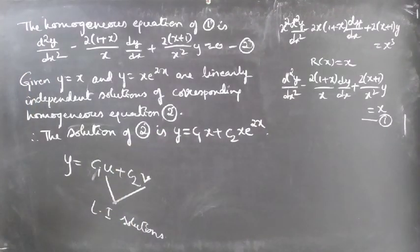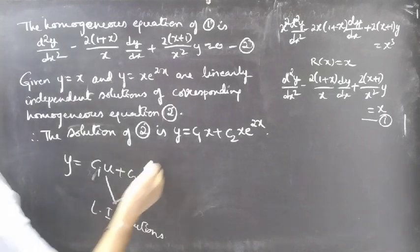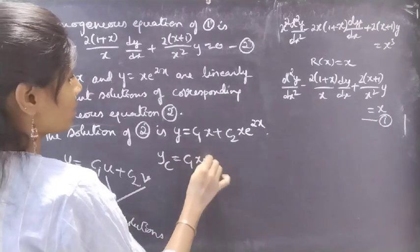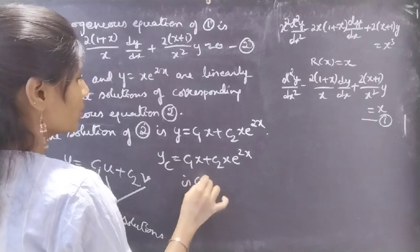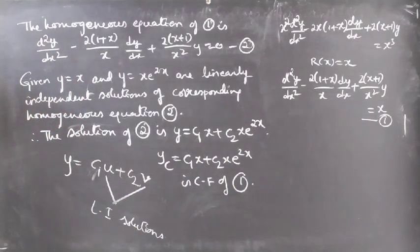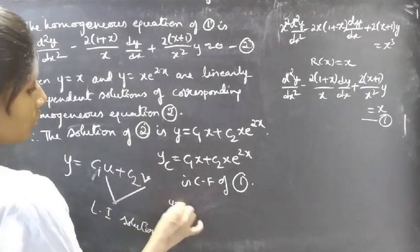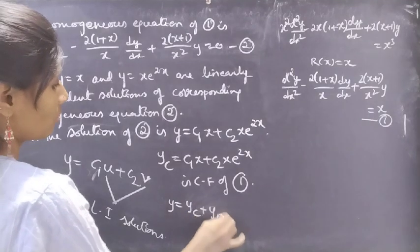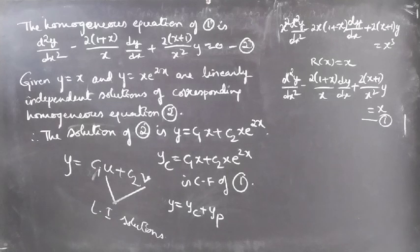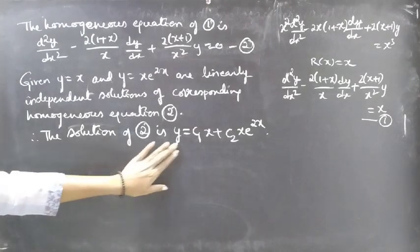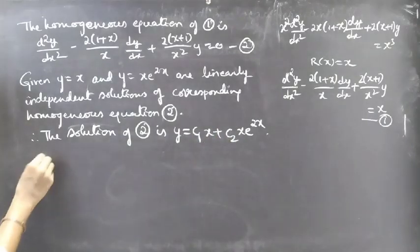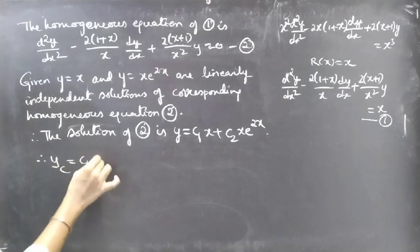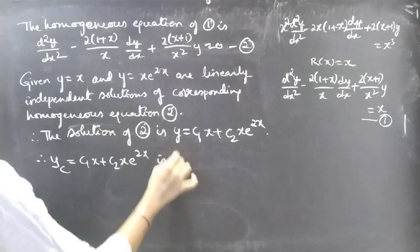Using this solution we write the solution of the given differential equation. yc = c₁x + c₂xe^(2x) is the complementary function of equation 1. We can find the general solution using y = yc + yp.